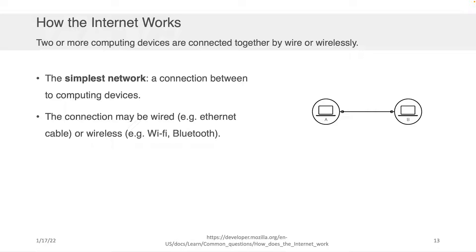So let's start with the simplest possible network. We have two machines, A and B, and we'd like to exchange information between them. One way we can do that is hook a cable between them — an Ethernet cable as an example. After we have a cable connecting them, we need an agreed-upon way to send the information across that cable. We need a way to turn the digital signals in machine A into an analog signal that moves across that cable to B, and then a way for B to translate that analog signal back into the digital signal so it understands what A was sending. If we did that, we now have a network that allows A and B to communicate.